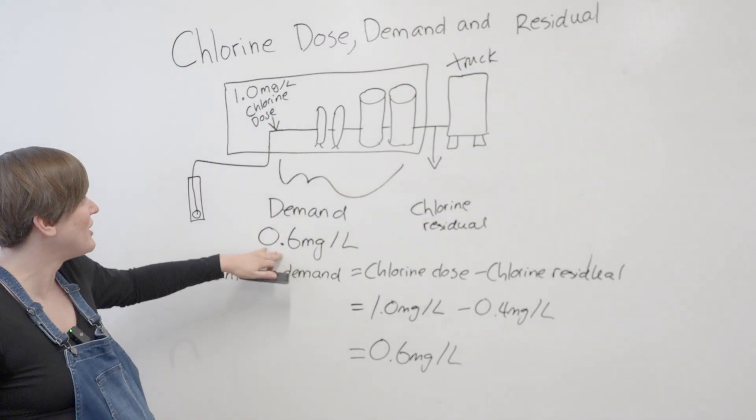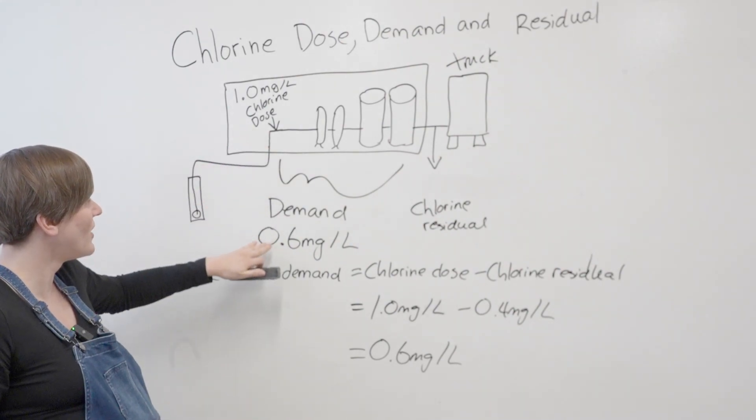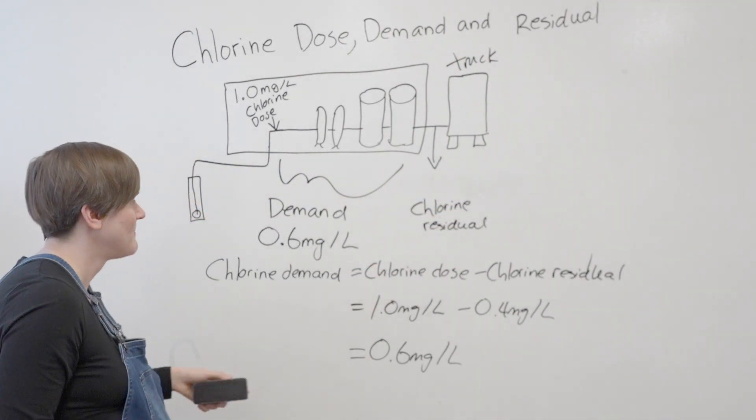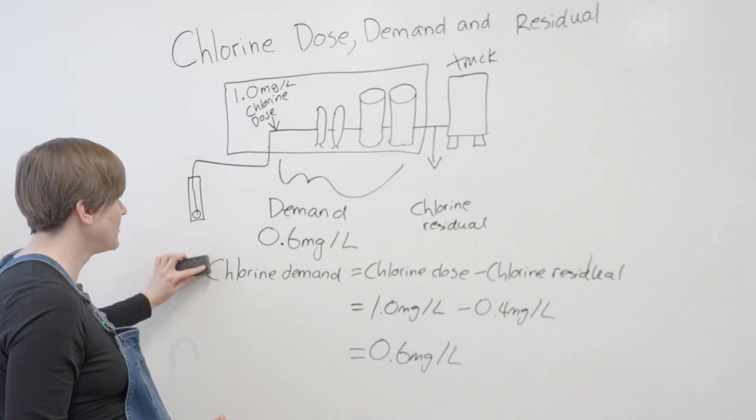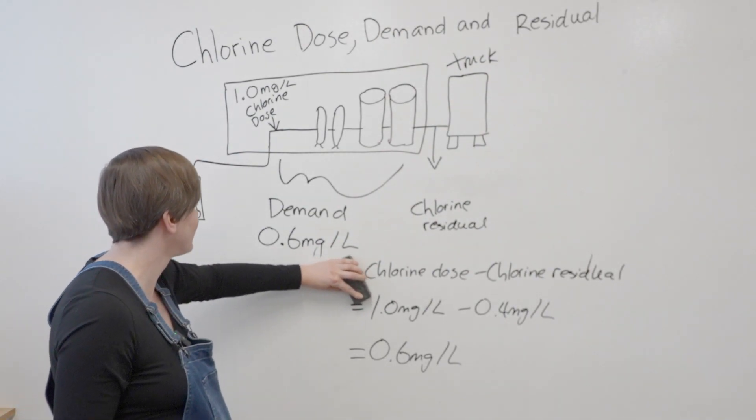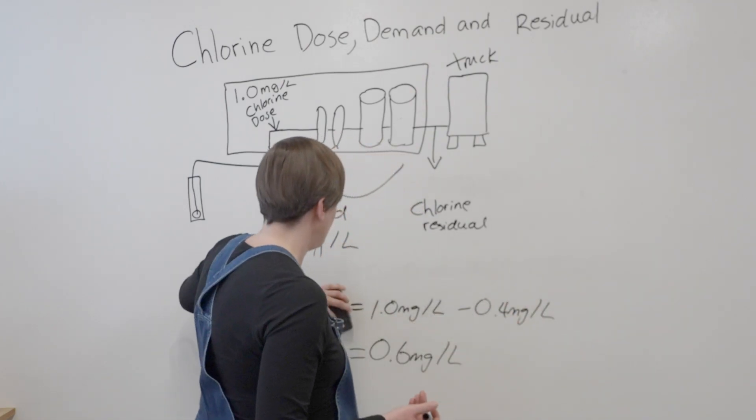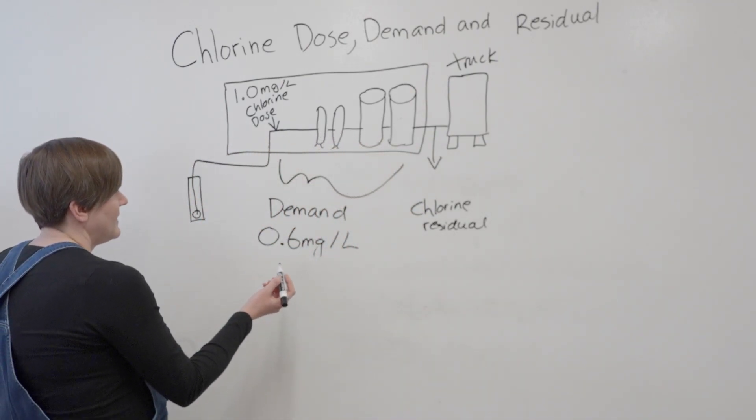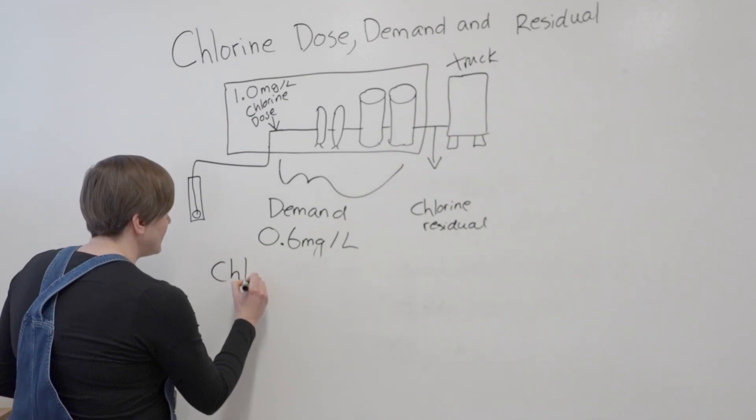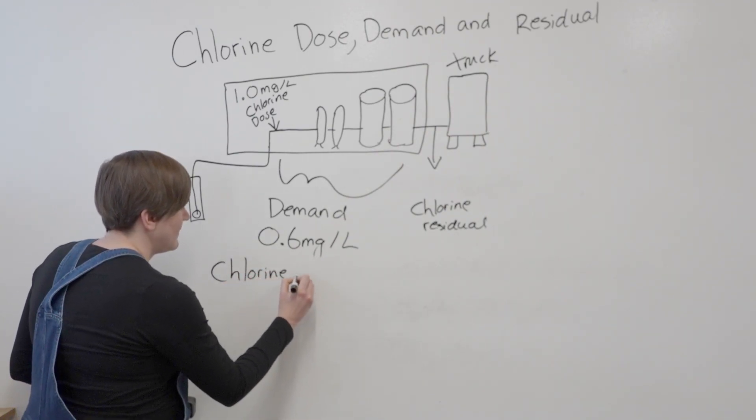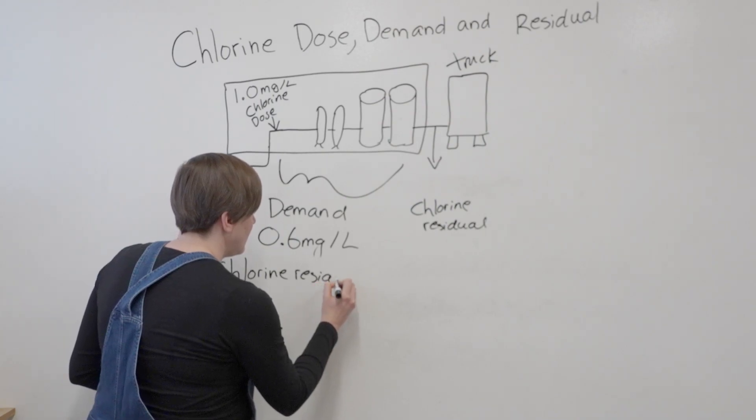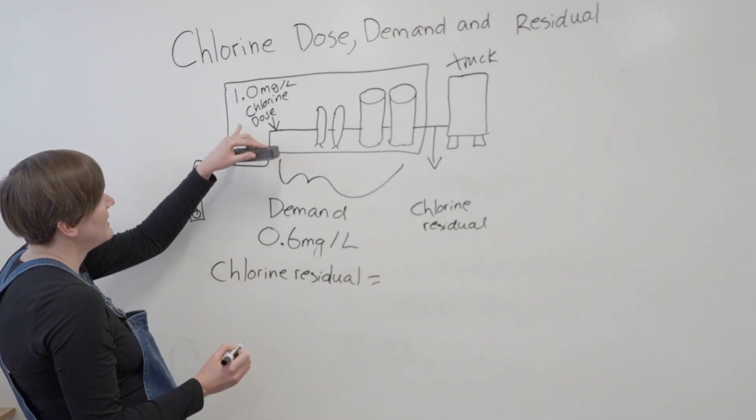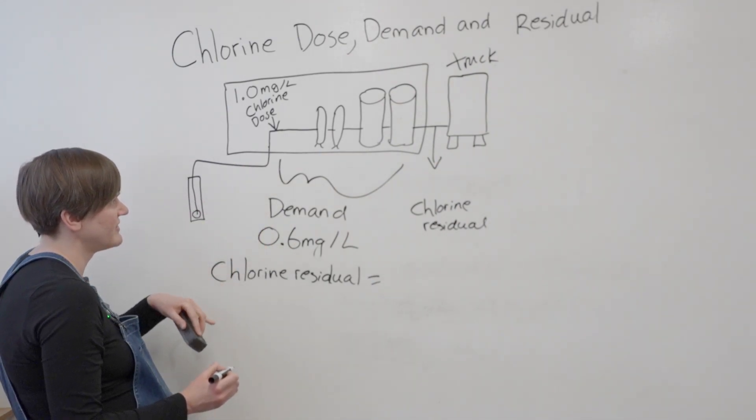Because it's pretty intuitive - you're starting with 1, you're taking away 0.6, and your residual is going to be 0.4 milligrams per liter. And if we write this as a formula, now we want to know what chlorine residual is.